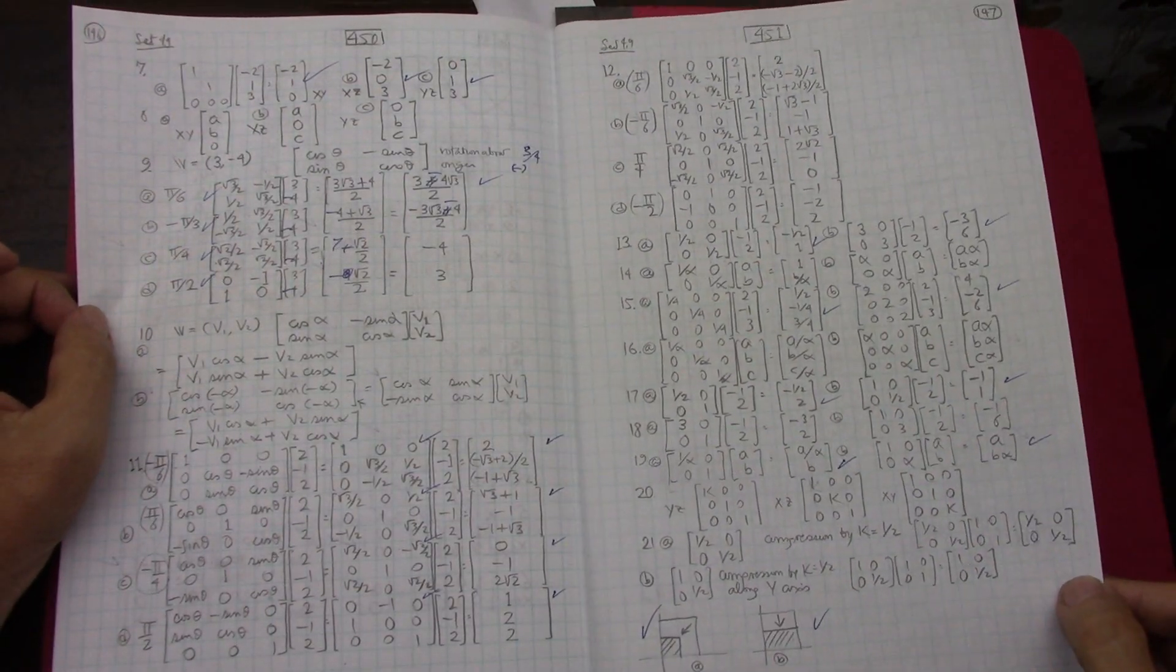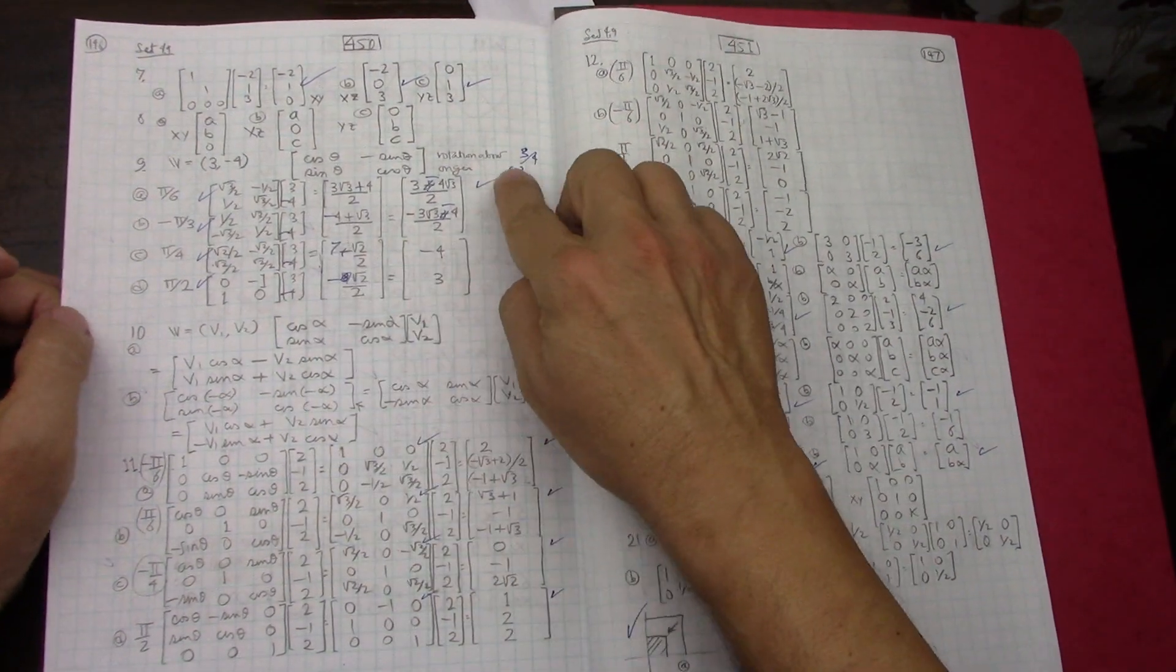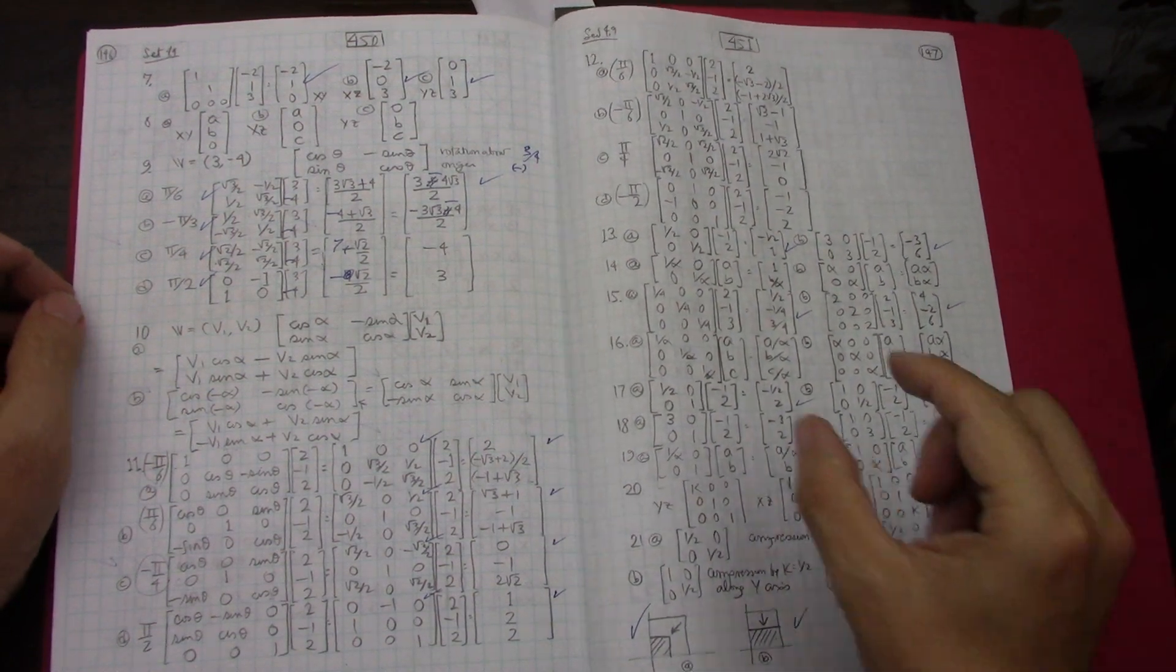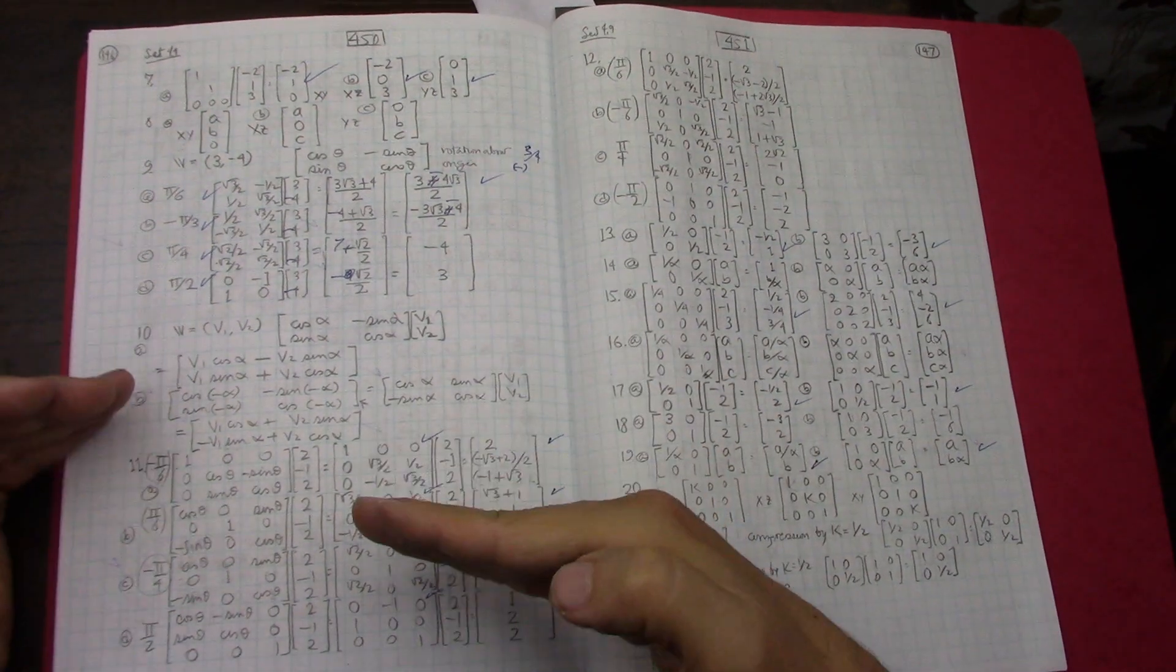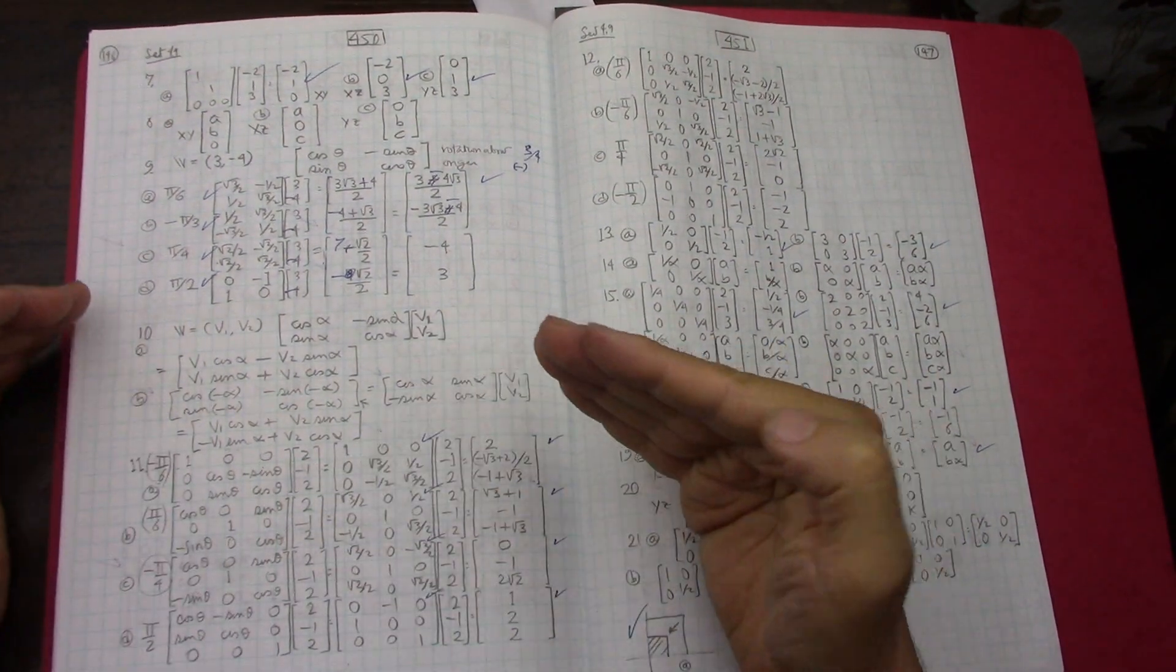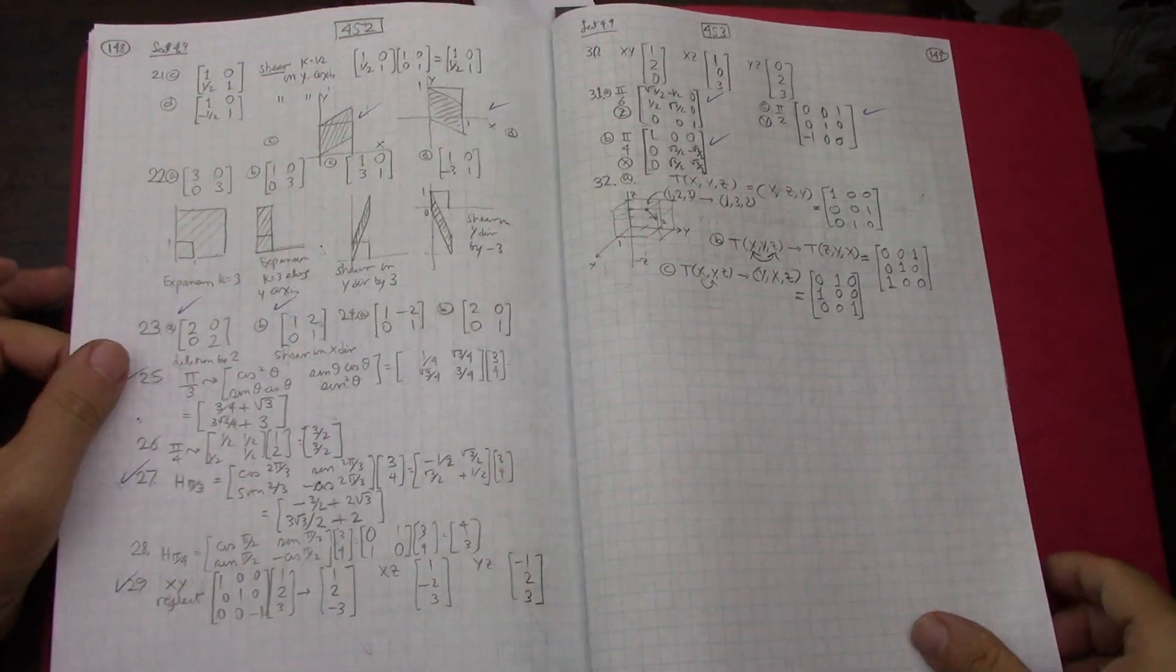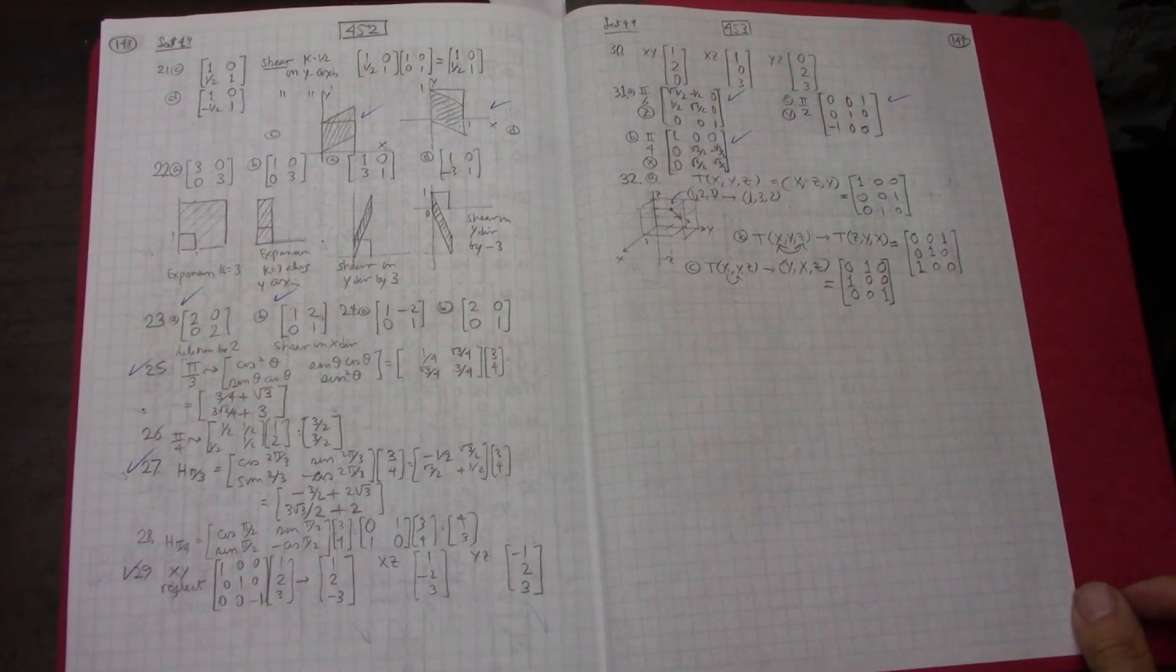Just by referencing that table. I did forget this was a minus 4 instead of a 4 when I checked the answer. But yeah, you have your basic matrices and you know which ones are shears, which ones are dilations, which ones are rotations or projections. Just crank them all out. And that was sections 4.8 and 4.9.